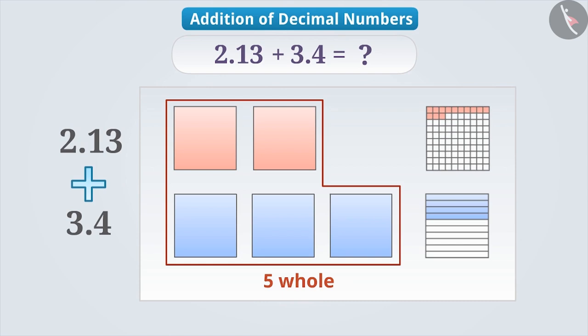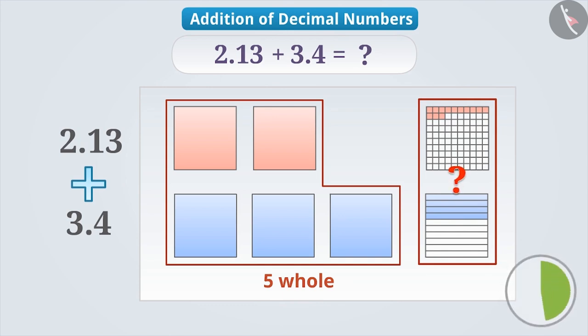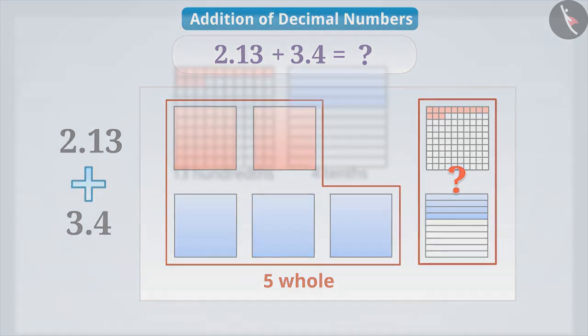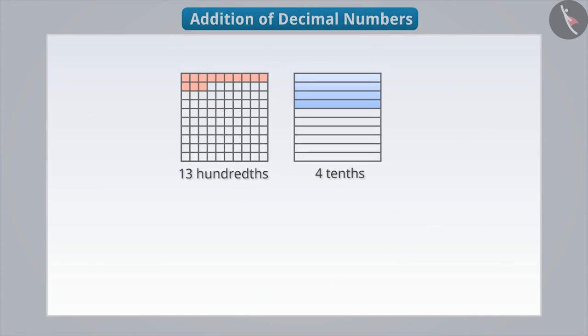Now let's add 13 hundredths and 4 tenths. Can you tell me how to do this? Think for a while. Okay, let me tell you. If we talk about the square for 4 tenths, then we can divide each of its parts into 10 equal parts.